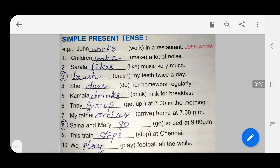John dash is a restaurant. John is a singular one. What do you do in the bracket? John works in a restaurant.